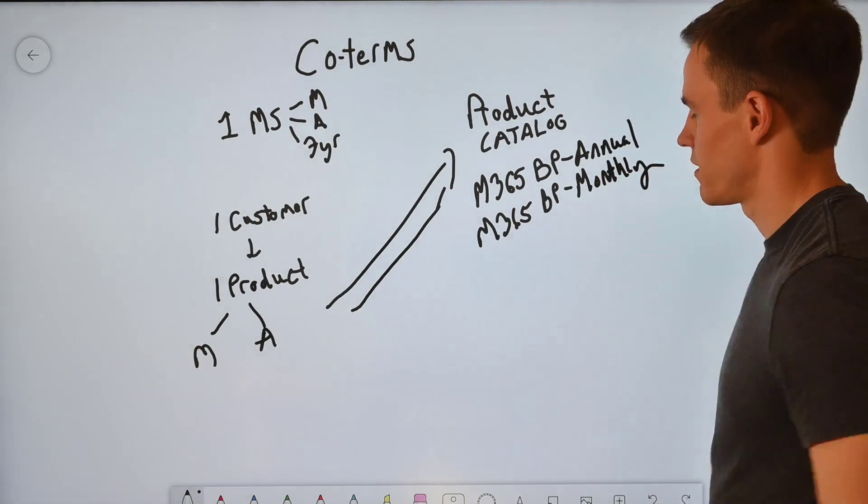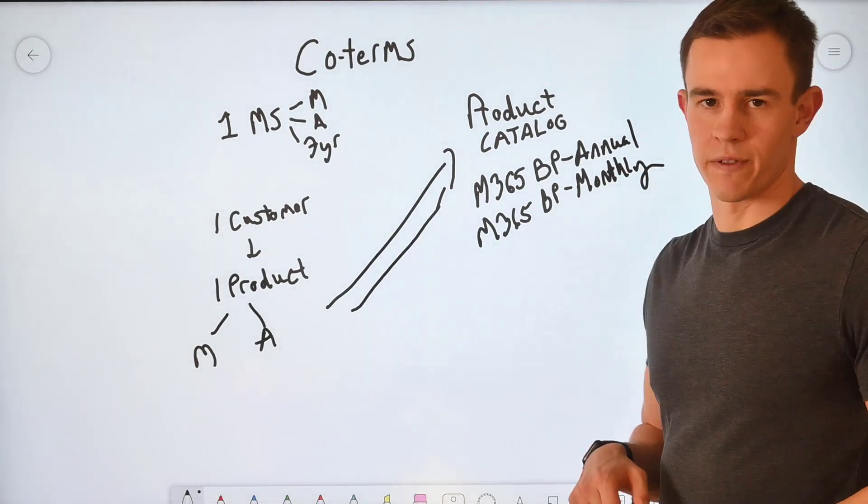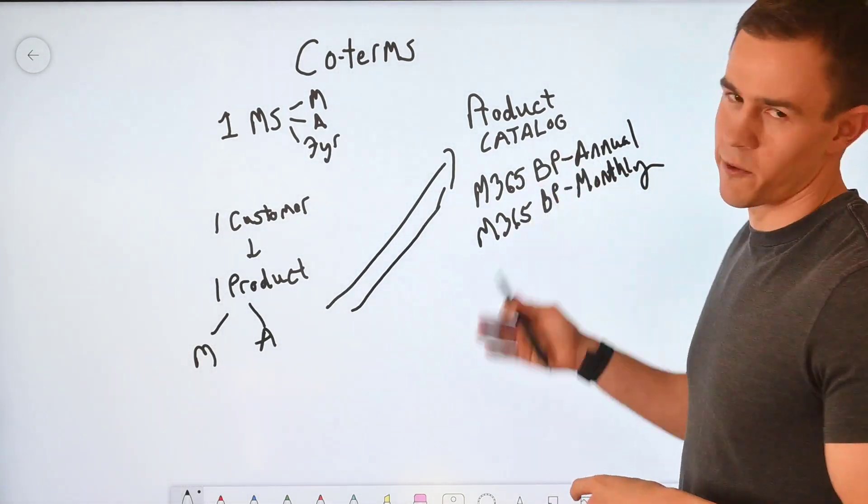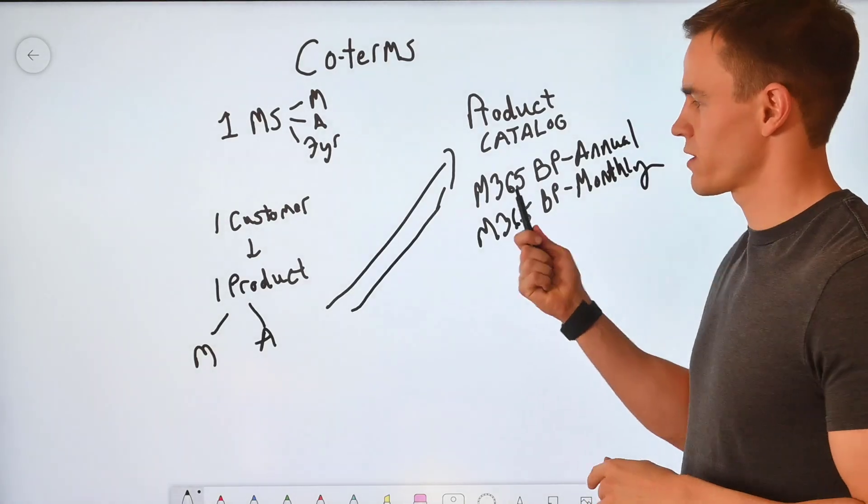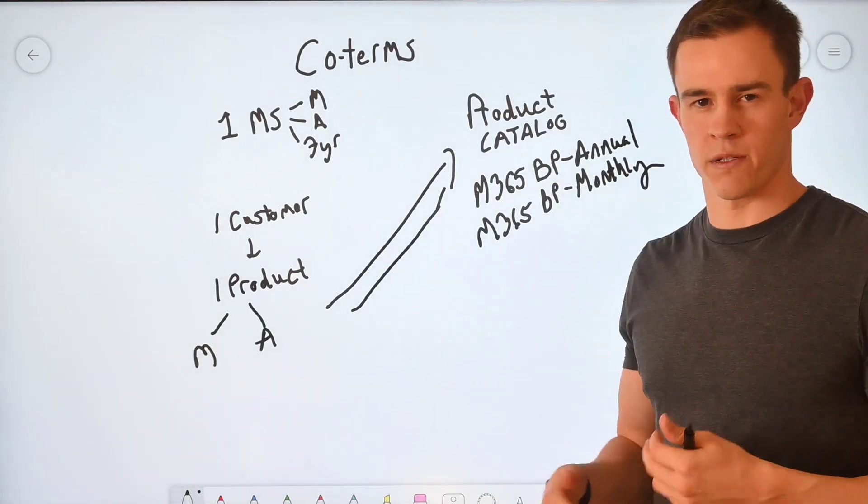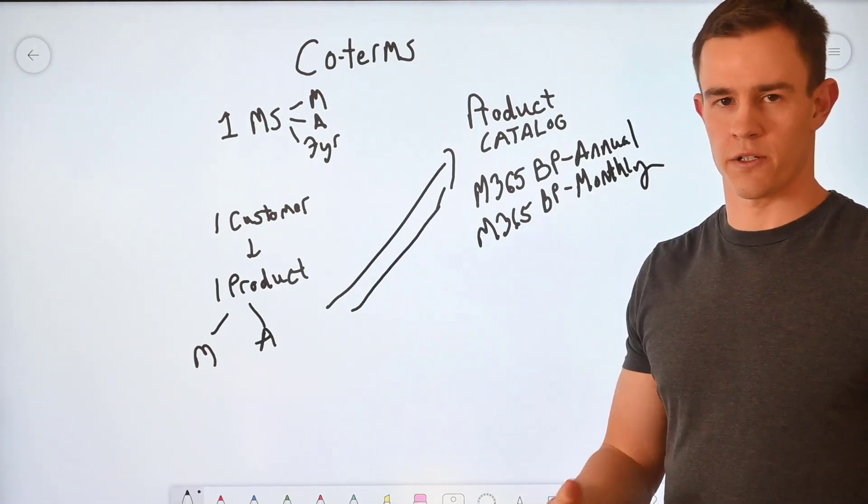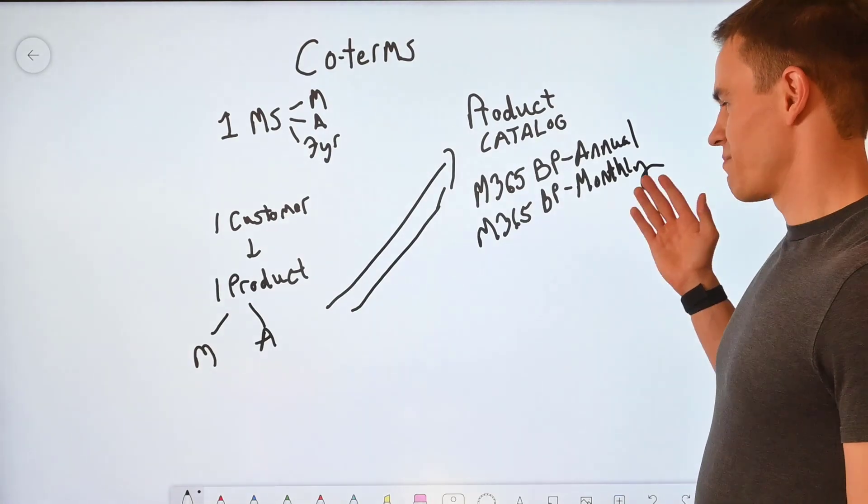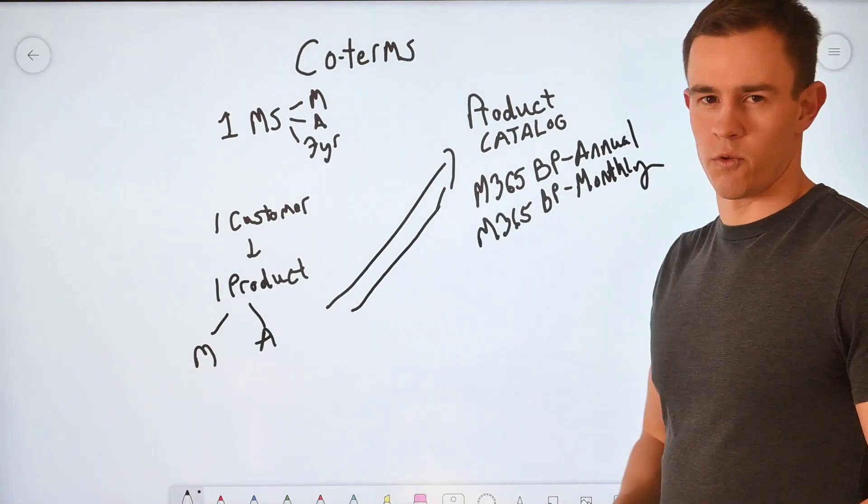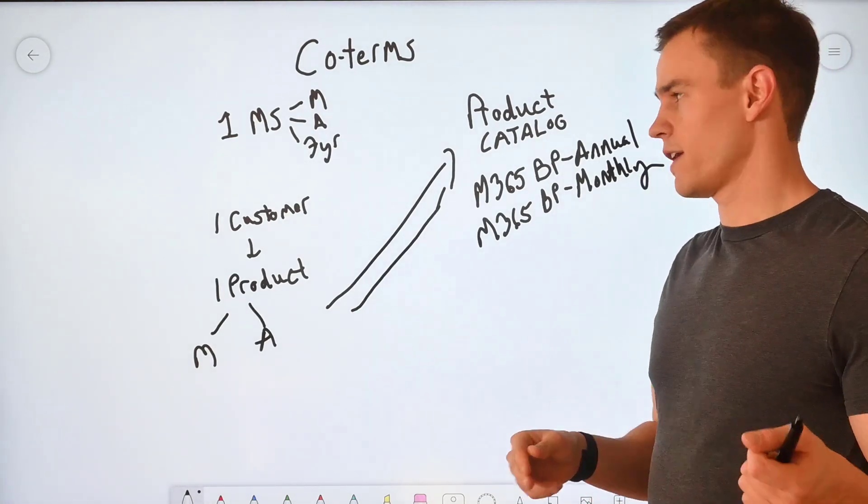This is likely a format or template of the nomenclature you might use to differentiate on your agreements or contracts for customers so they understand why there's a variance and why there's two line items of potentially the same product that they get from you. So this is mostly built again for the fact that monthlies will be 20% premium over the annuals.